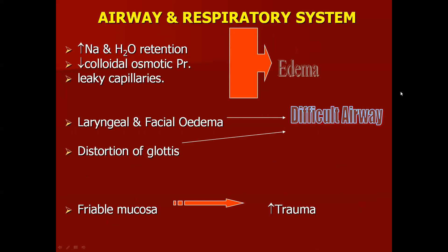In the airway and respiratory system, increased sodium and water retention, reduced colloid osmotic pressure, and leaky capillaries due to endothelial dysfunction lead to generalized edema including edema of the airway. There are increased chances of laryngeal edema and distortion of the glottis, which can lead to a difficult airway. One must be very cautious in dealing with these patients, as anesthesiologists may encounter a difficult airway situation. In pregnancy, the mucosa is already friable, and in preeclampsia it becomes more friable, risking trauma during laryngoscopy or intubation.